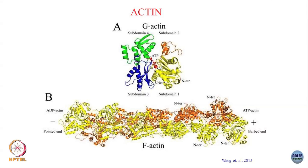The more you go away from the plus end — let us say this is the plus end of the actin over here and the minus end on this side — the more likely it is that the ATP has hydrolyzed to become ADP. So these are the two states we were talking about in the previous class.